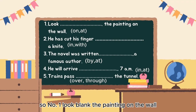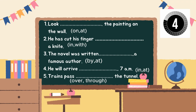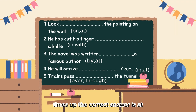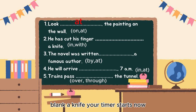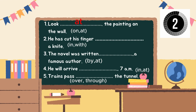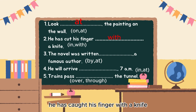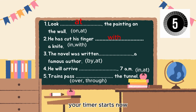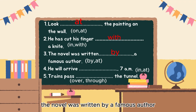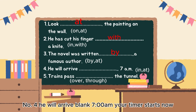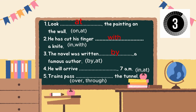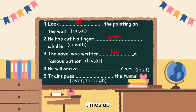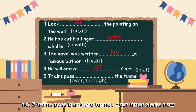Question 1: 'Look ___ the painting on the wall.' The correct answer is 'at' — 'Look at the painting on the wall.' Question 2: 'He has cut his finger ___ a knife.' The correct answer is 'with' — 'He has cut his finger with a knife.' Question 3: 'The novel was written ___ a famous author.' The correct answer is 'by' — 'The novel was written by a famous author.' Question 4: 'He will arrive ___ 7 a.m.' The correct answer is 'at' — 'He will arrive at 7 a.m.'